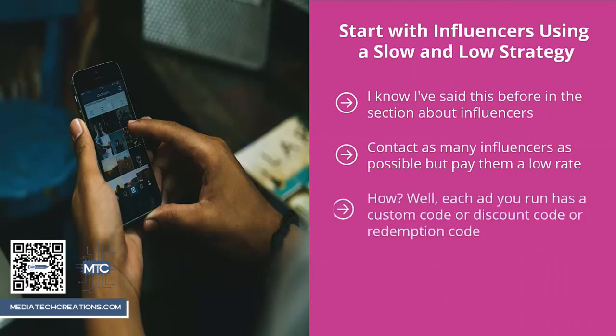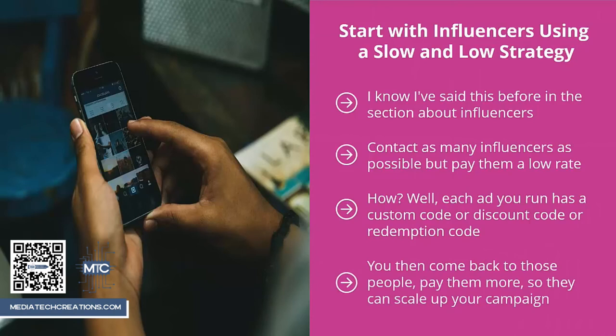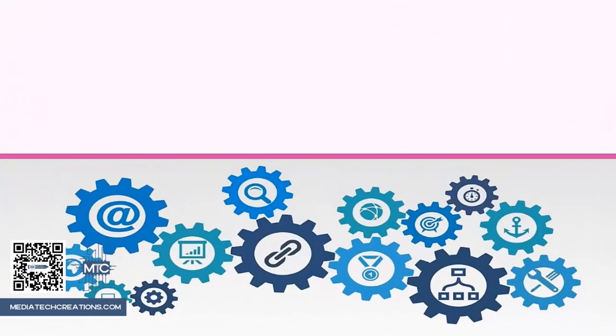Each ad you run has a custom code, discount code, or redemption code, so you'll be able to see which ones actually produce results. You then come back to those people, pay them more, and scale up your campaign. They're obviously real and credible enough with their followers to drive actual sales.